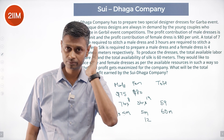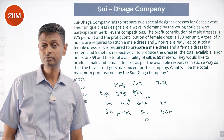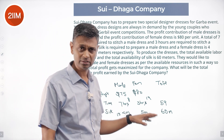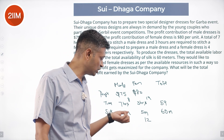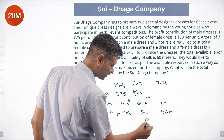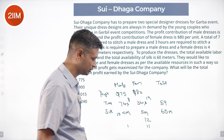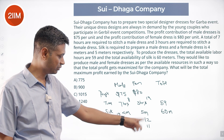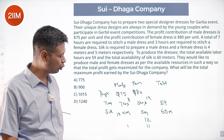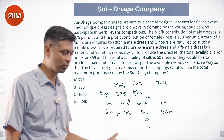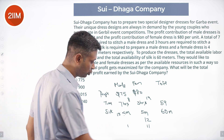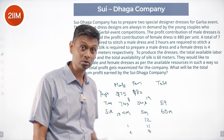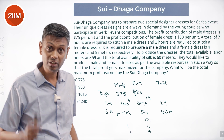If I produce 12 female dresses using only 36 hours, I have 23 hours remaining that go to waste. So I'll sacrifice some female dresses and replace them with male dresses to utilize that time. If I produce 11 female dresses, that's 55 meters of silk used, leaving 5 meters for one male dress — not good enough. Trying 10 female gives 2 male — still not efficient enough.